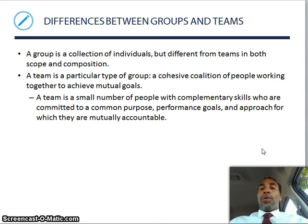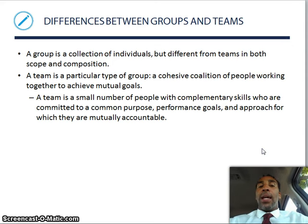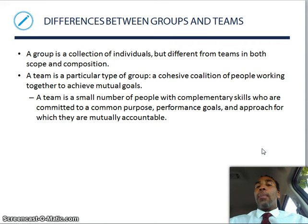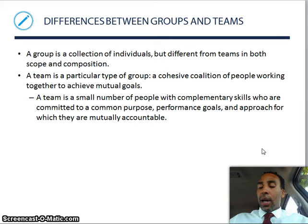Now the differences between groups and teams: a group is a collection of individuals, but different from teams in both scope and composition. A team is a particular group — a cohesive coalition of people working together to achieve mutual goals. More specifically, a team is a small number of people with complementary skills who are committed to a common purpose, performance goals, and an approach for which they are mutually accountable.